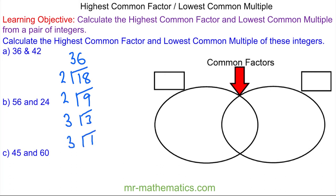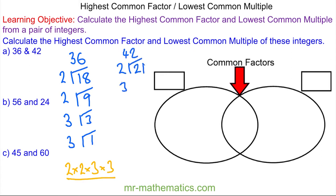So 36 as its prime factors is 2 multiplied by 2 multiplied by 3 and another 3. For 42, 2 goes into 42 twenty-one times, 3 goes into 21 seven times, and 7 is also prime which goes into it one time.